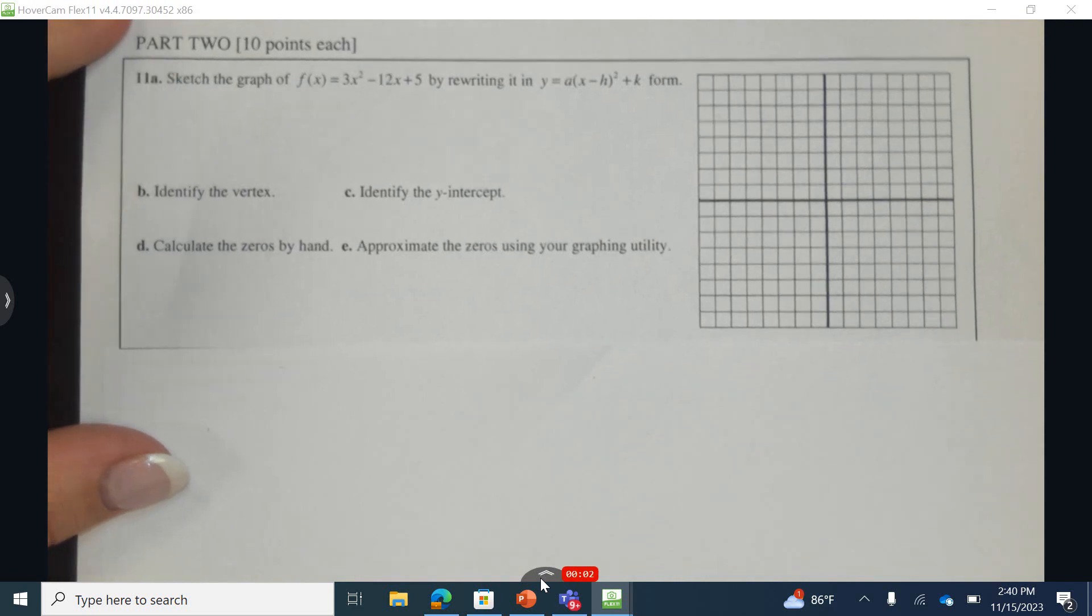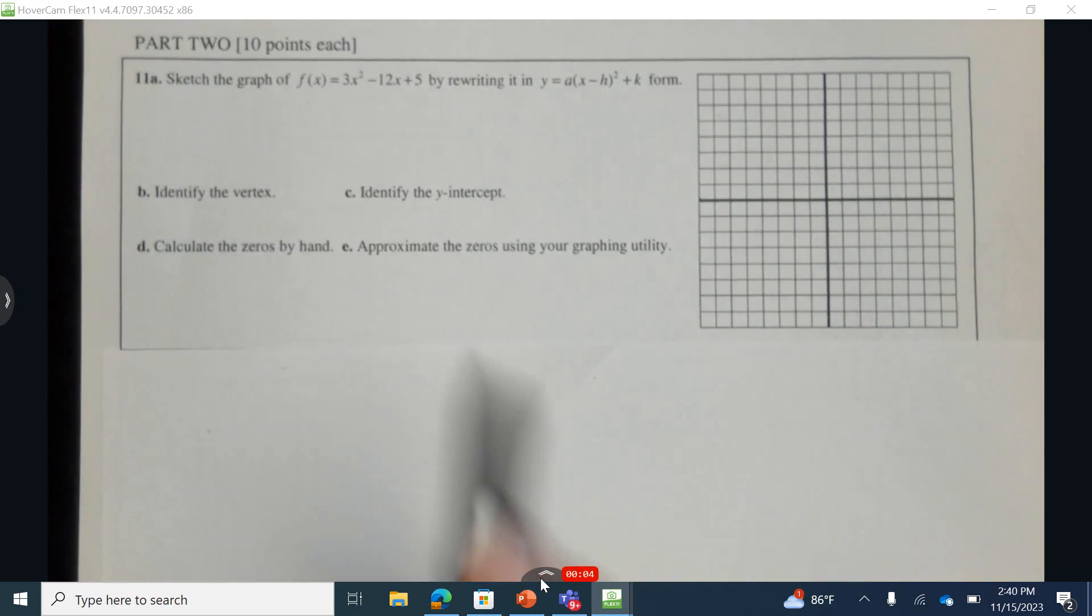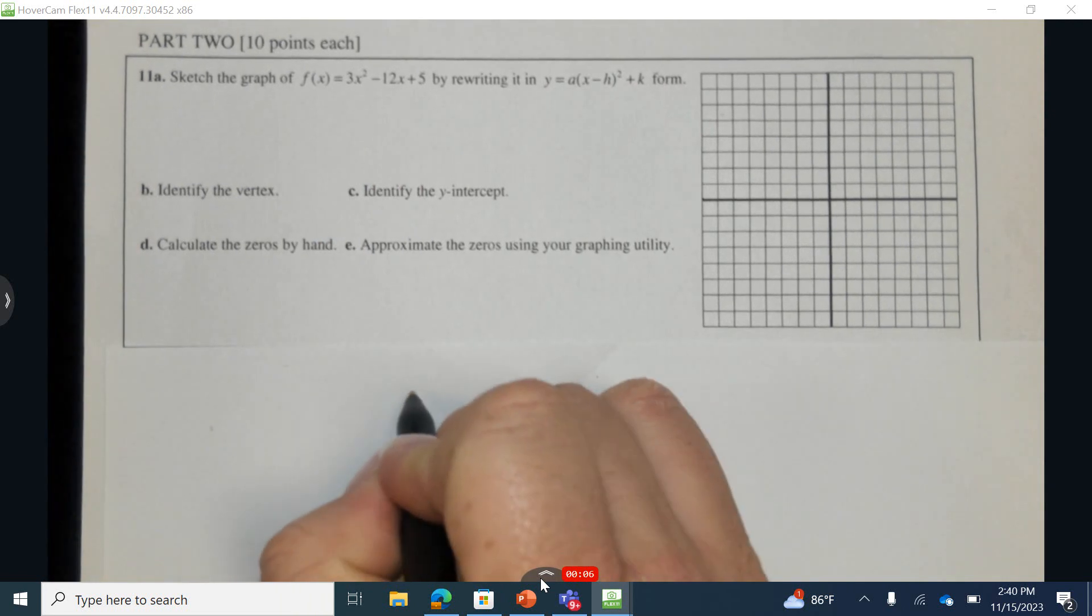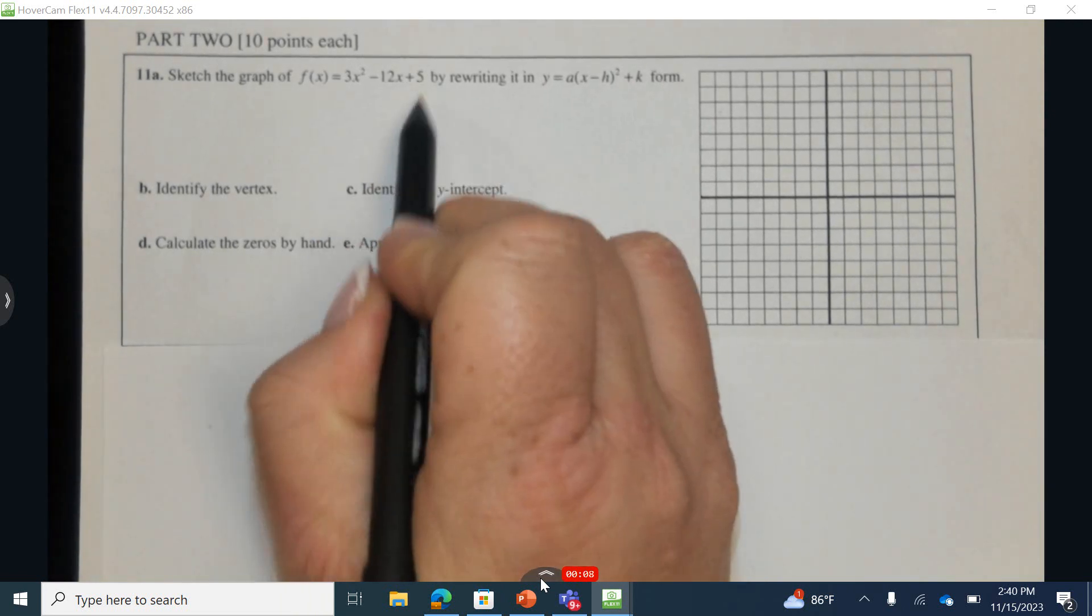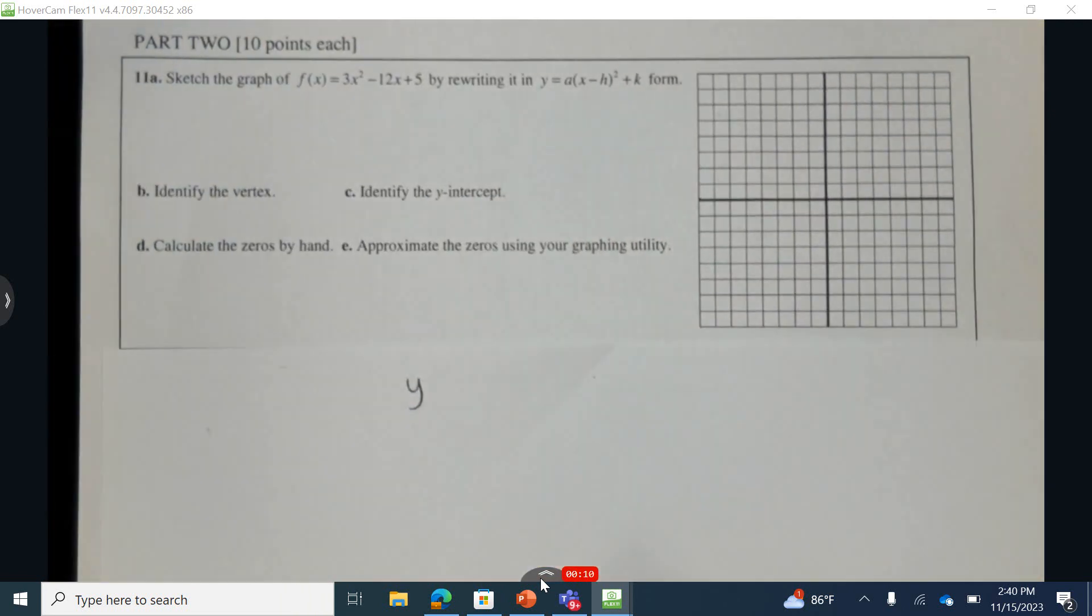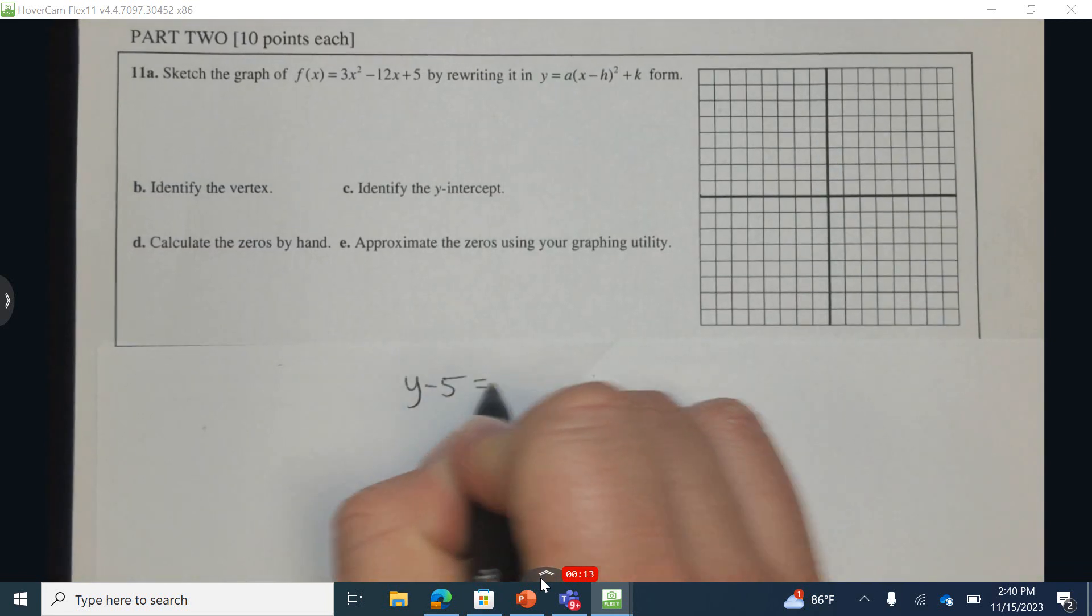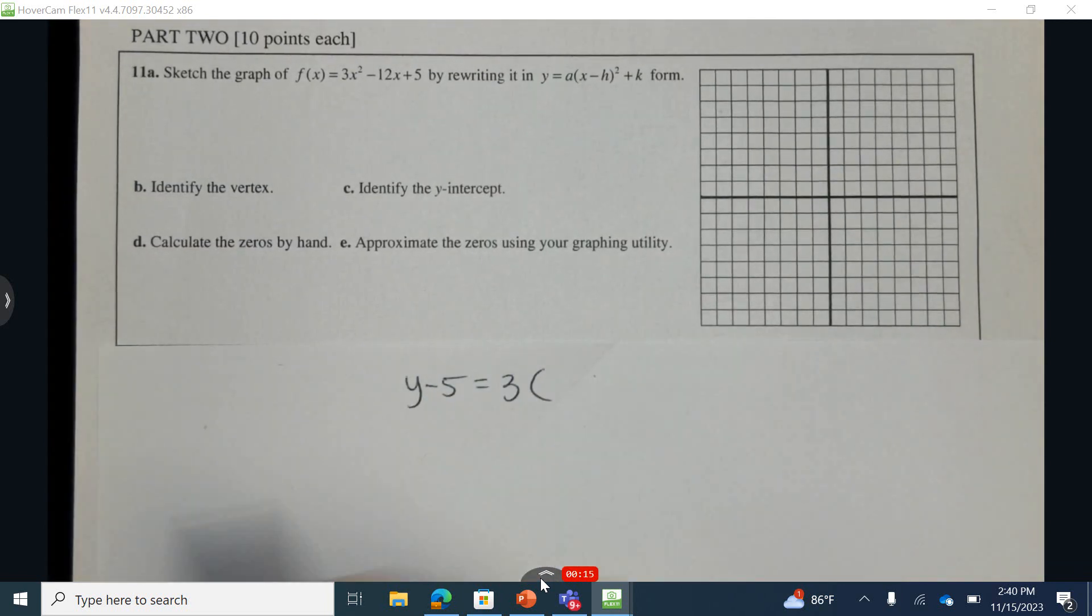Number 11. This doesn't give me enough space in this area, so I'm going to start by rewriting this in vertex form. First thing I'm going to do is move 5 to the opposite side. When I move it over, the 5 is going to turn into a negative 5. And then I'm going to factor out a 3.